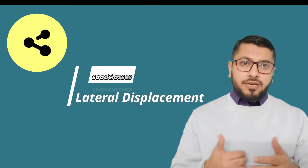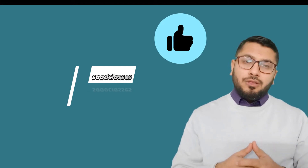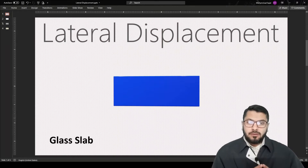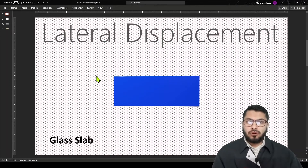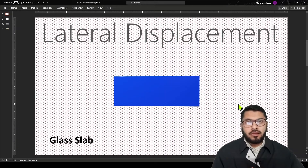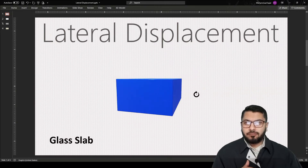Do share it with your friends if you like it and give it a thumbs up. Let's get started. In front of me is a glass slab. Basically a glass slab is a cuboid, a 3D shape, but on a 2D plane we will see a simple rectangle. As you can see on my screen, a blue rectangular figure. I will show you the 3D shape of a cuboid and how a glass slab looks — so a glass slab is basically a 3D model.